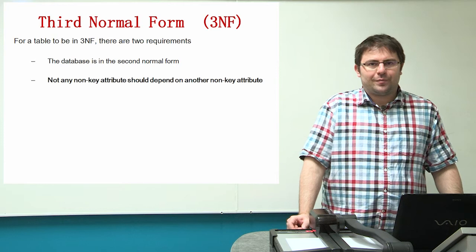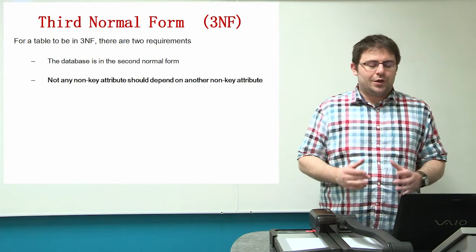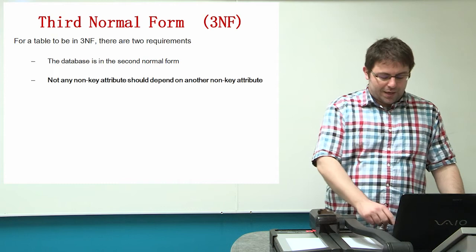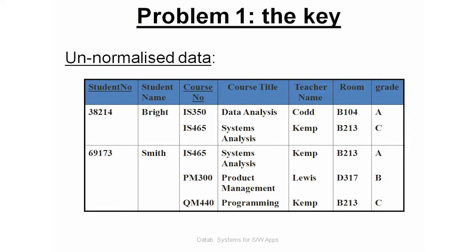Normalization requires much practice and every year students struggle with it, so it's better to see how it is implemented in an example. We have the following table and as we can see, the table has some duplicated data and some repeating attributes. The duplicated data are data that duplicate themselves for different values — for example, the course number, course title, teacher number, teacher name, room, and grade. The duplicated data are the student number and the student name.